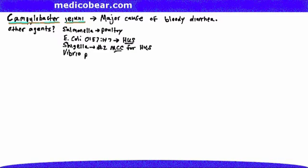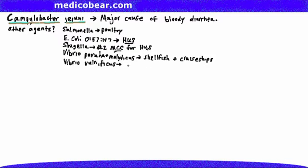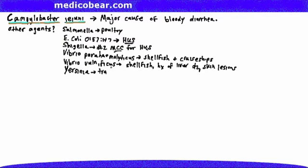We've got Vibrio parahaemolyticus, which is associated with shellfish — and in the question stem, you could be looking out for cruise ships. Vibrio vulnificus is also associated with shellfish, along with a history of liver disease and skin lesions. Yersinia, especially Yersinia enterocolitica, can cause bloody diarrhea and can be transmitted from pet feces, bad milk, and pork.